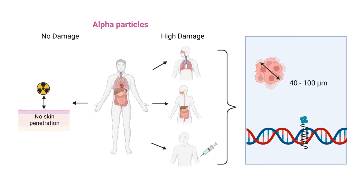Alpha particles, on the other hand, are not dangerous when contaminating your skin — there is no skin penetration. However, they are severely dangerous when ingested, inhaled, or injected. And of course, if you have contamination anywhere, the chances of inhalation and ingestion increase, so one has to be very careful when working with alpha particles. Alpha is highly cytotoxic and can damage both strands of the DNA and cause further abnormalities.